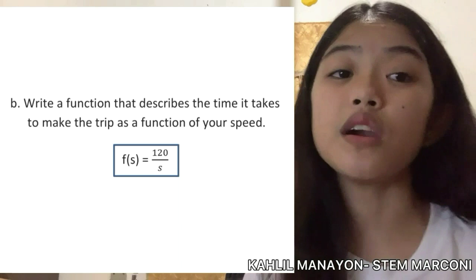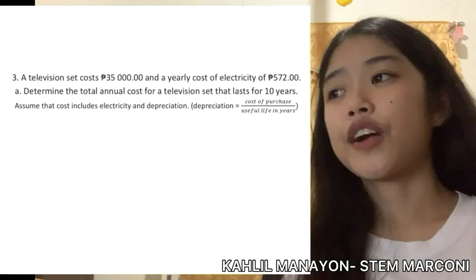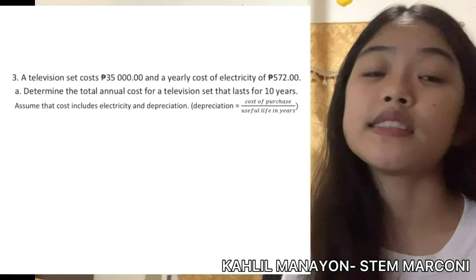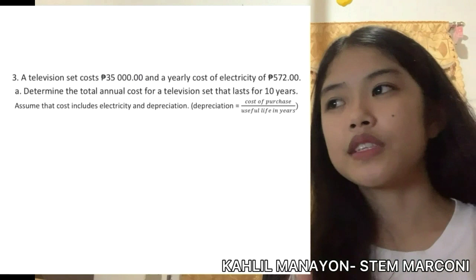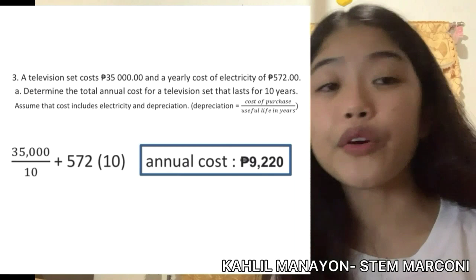Problem number three: a television set costs 35,000 pesos with a yearly electricity cost of 572 pesos. For question a, we determine the total annual cost for a television set that lasts 10 years, assuming cost includes electricity and depreciation. Depreciation equals cost of purchase over useful life in years, so depreciation equals 35,000 over 10. We then add 572 multiplied by 10.